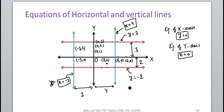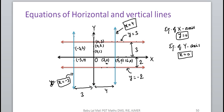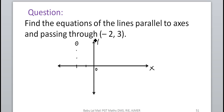We can write the equation of lines parallel to the axes and passing through the point (−2, 3). Let us draw the coordinate axes. This point is (−2, 3) — let us mark it as point A. Now we draw one horizontal line and one vertical line passing through point A.